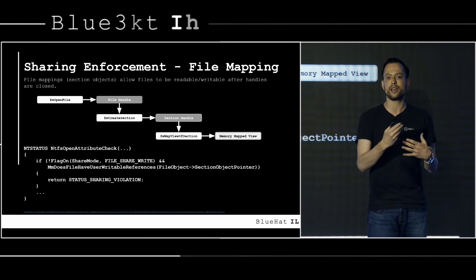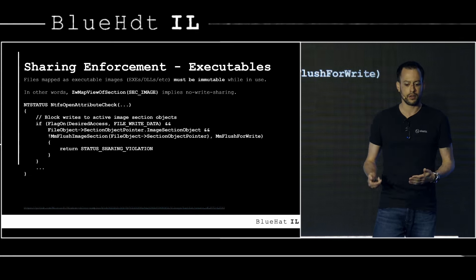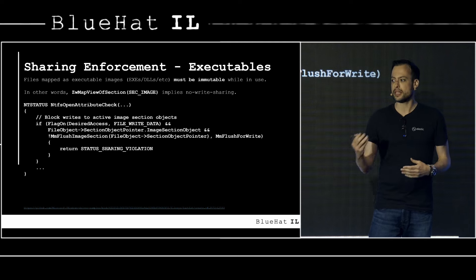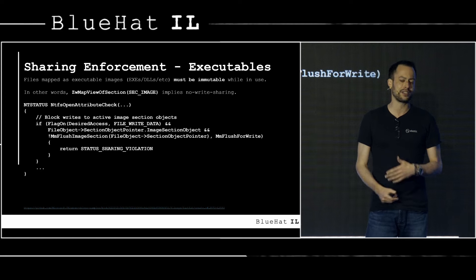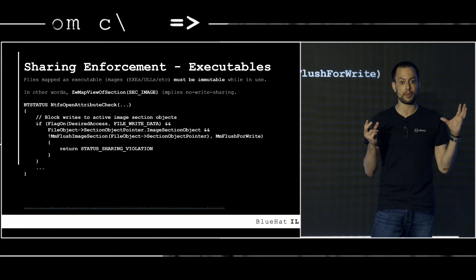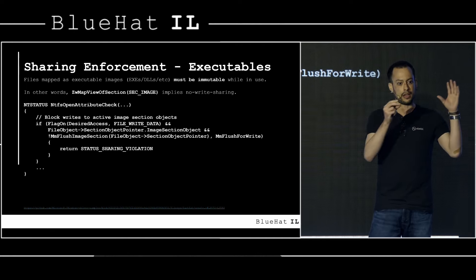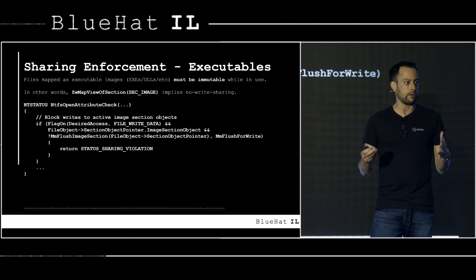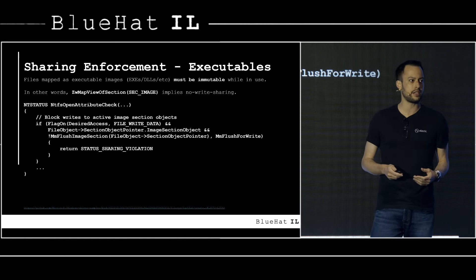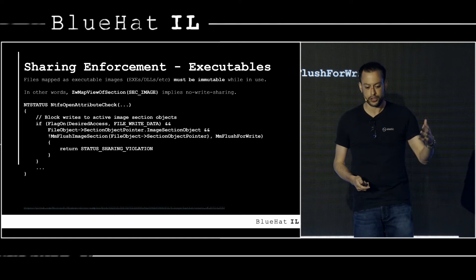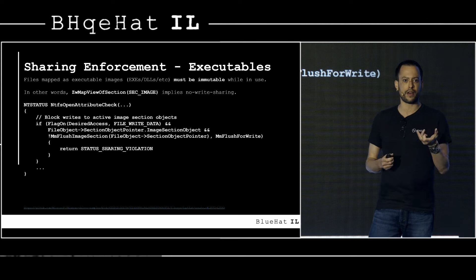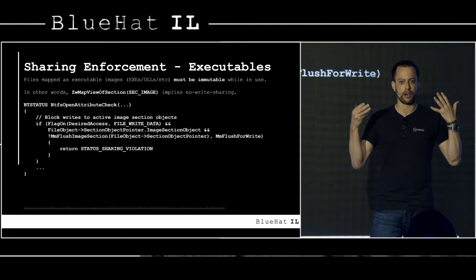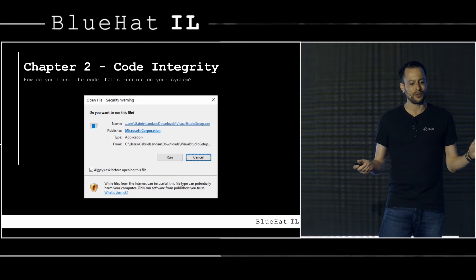For executables — EXEs, DLLs, .sys files, OCX, CPL — they're all PE (Portable Executable) files. If they're mapped as an executable image section (SEC_IMAGE), nobody should be allowed to modify that file while it is currently mapped and in use. NTFS has an NtfsOpenAttributeCheck function that verifies: if the request attempts to write data to the file, it only succeeds if there are currently no active uses of that PE file as an image section.